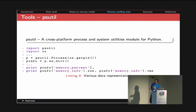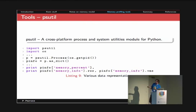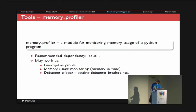Let's talk about some tools for Python memory profiling. First, psutil — a cross-platform API for system utilities. To get information about the current process memory, you can use psutil, get the PID of your process, and transform the information into a dictionary. Another tool is memory_profiler, which recommends using psutil as a dependency for faster operation. Memory profiler works in three different modes: line-by-line profiler, memory usage monitor, and debugger trigger.